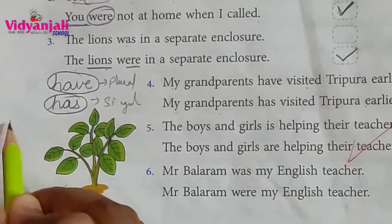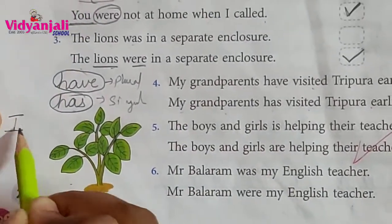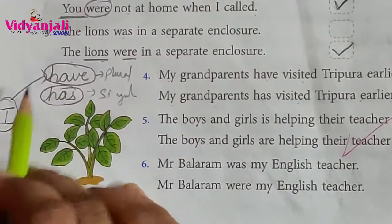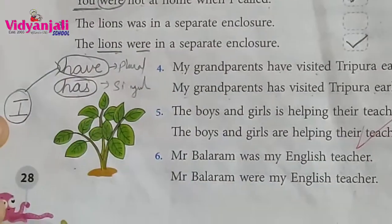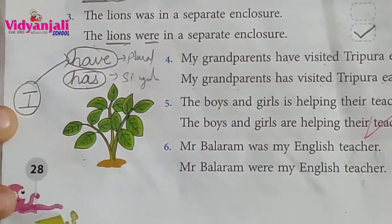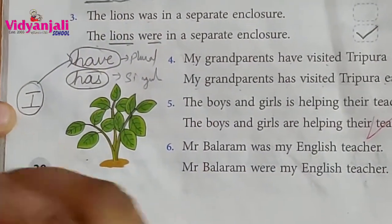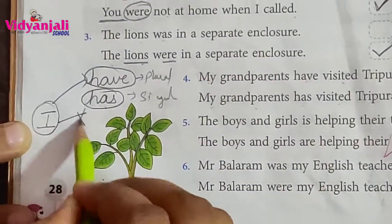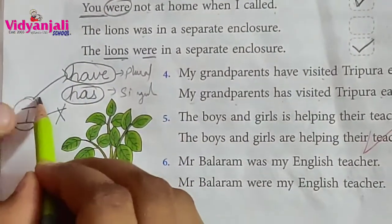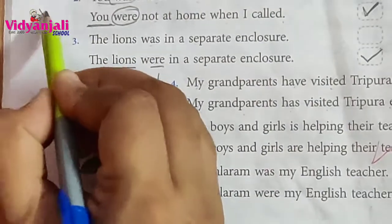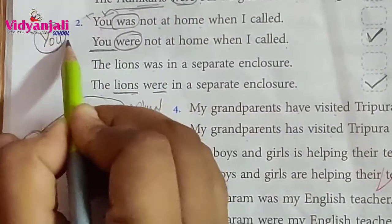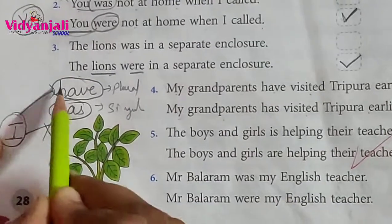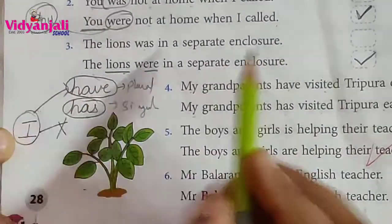Here there is one more exception. 'I' also takes the plural form. 'I have eaten,' 'I have completed my work' — we say that, right? So we don't use 'I has'; we use 'I have.' This is an exception. 'You' is also an exception — 'you' always takes plural. Here, 'I' always takes plural: 'I have.'